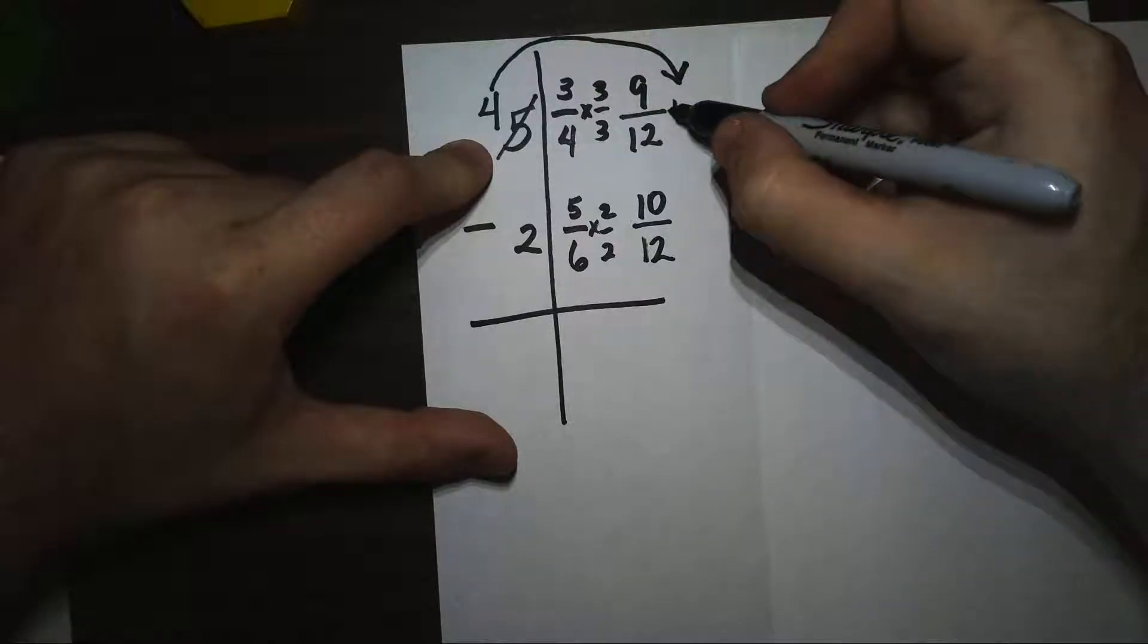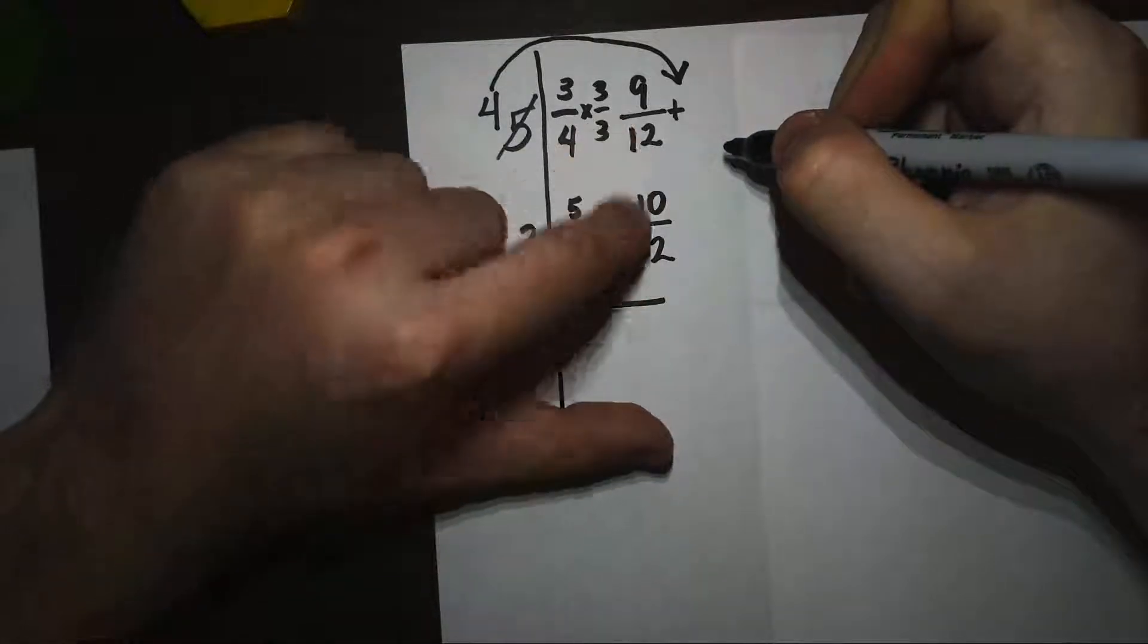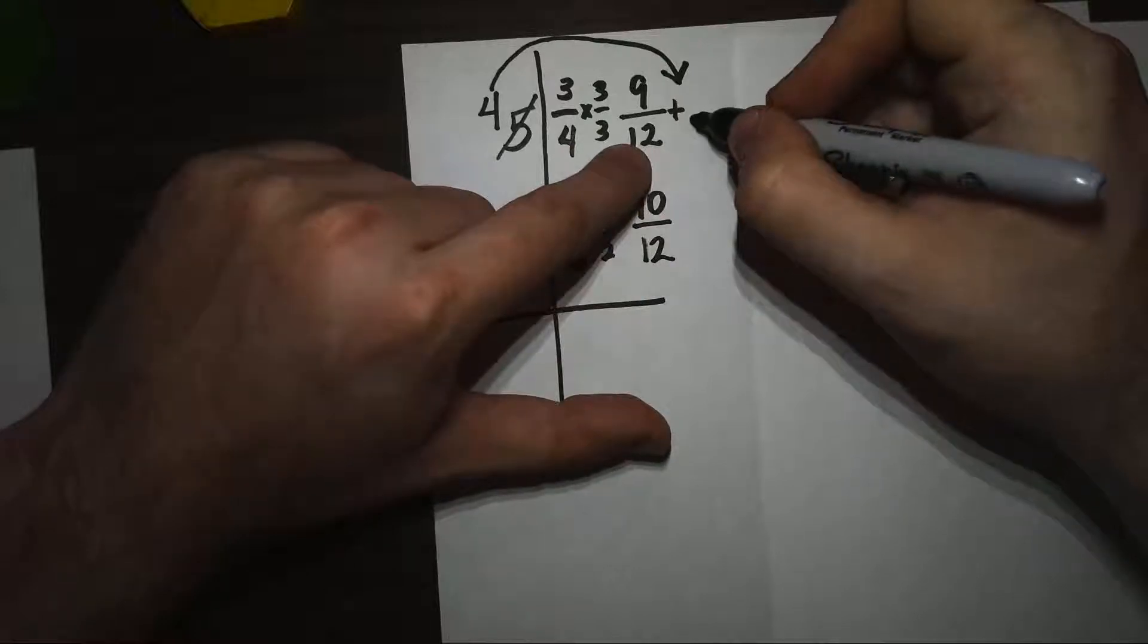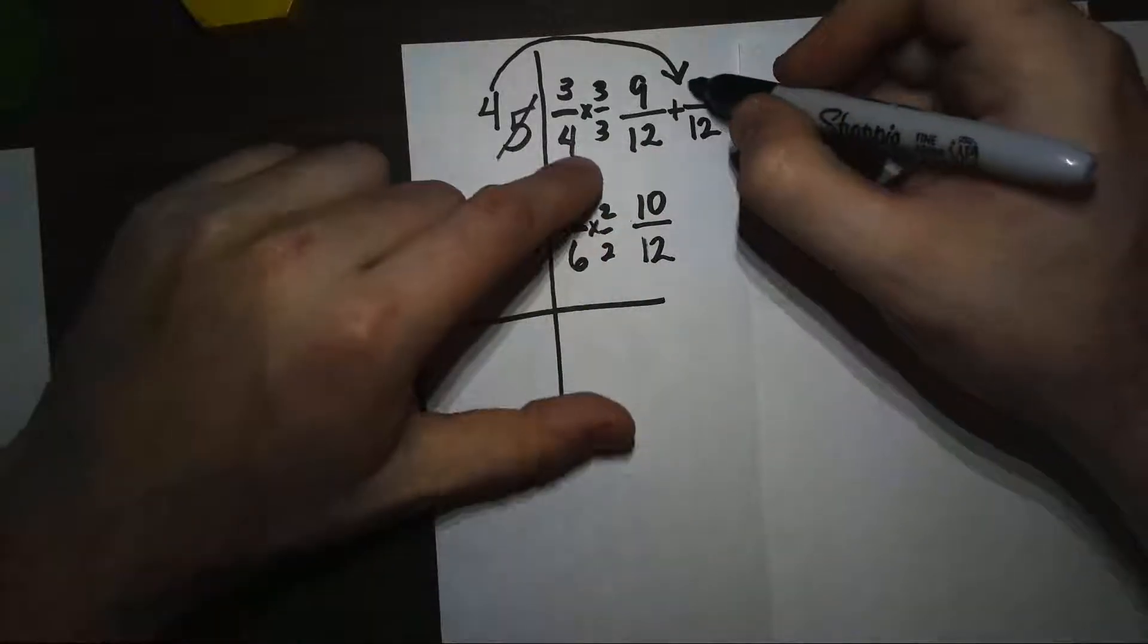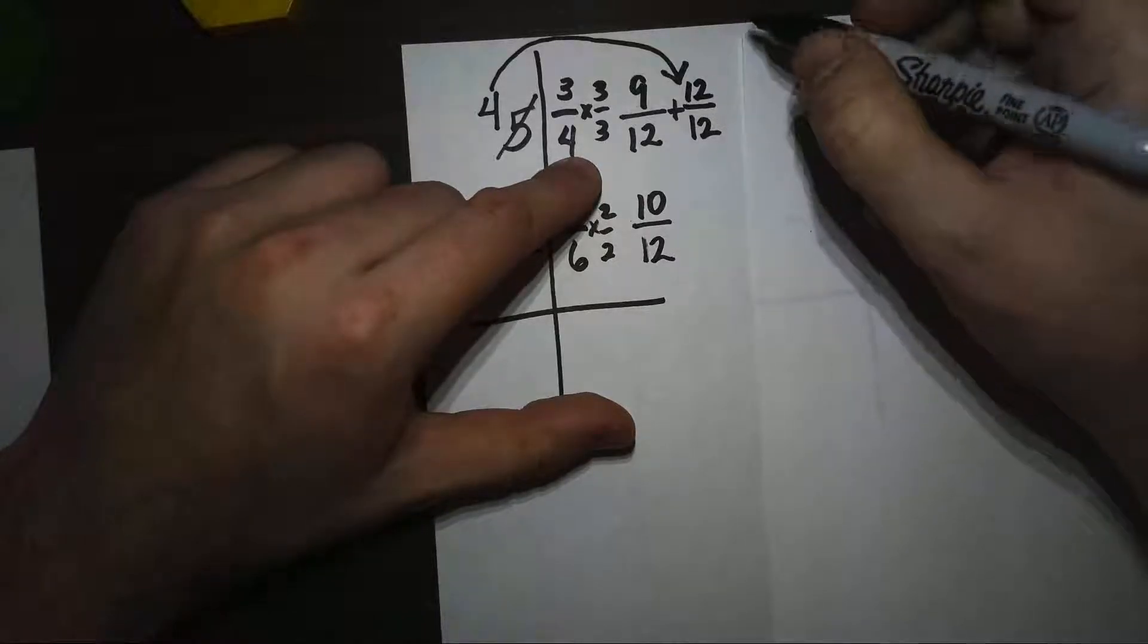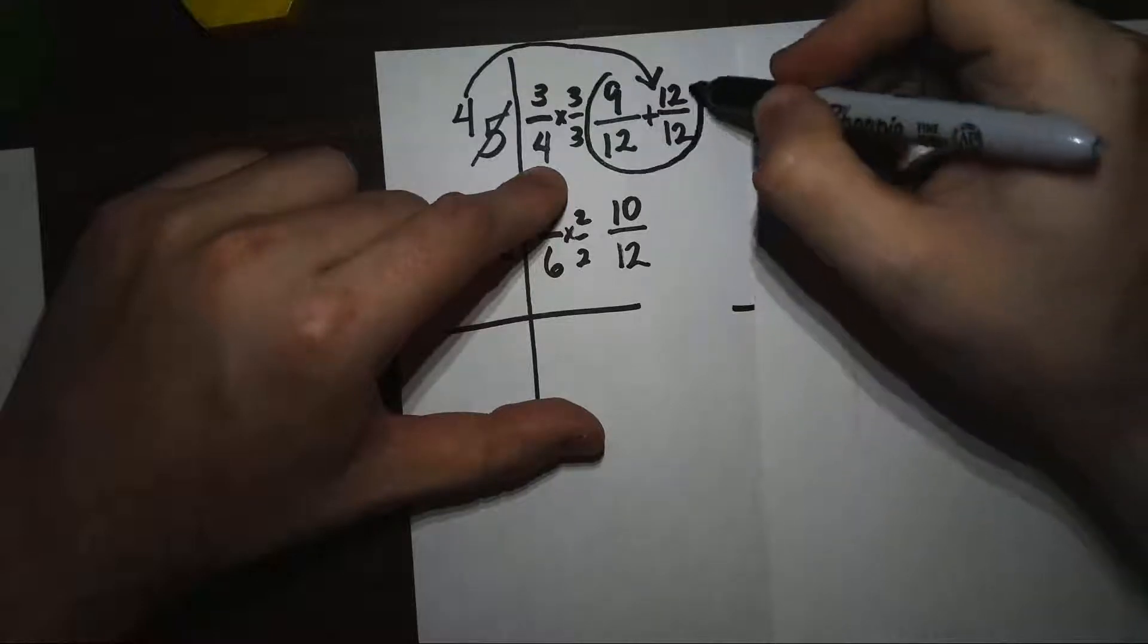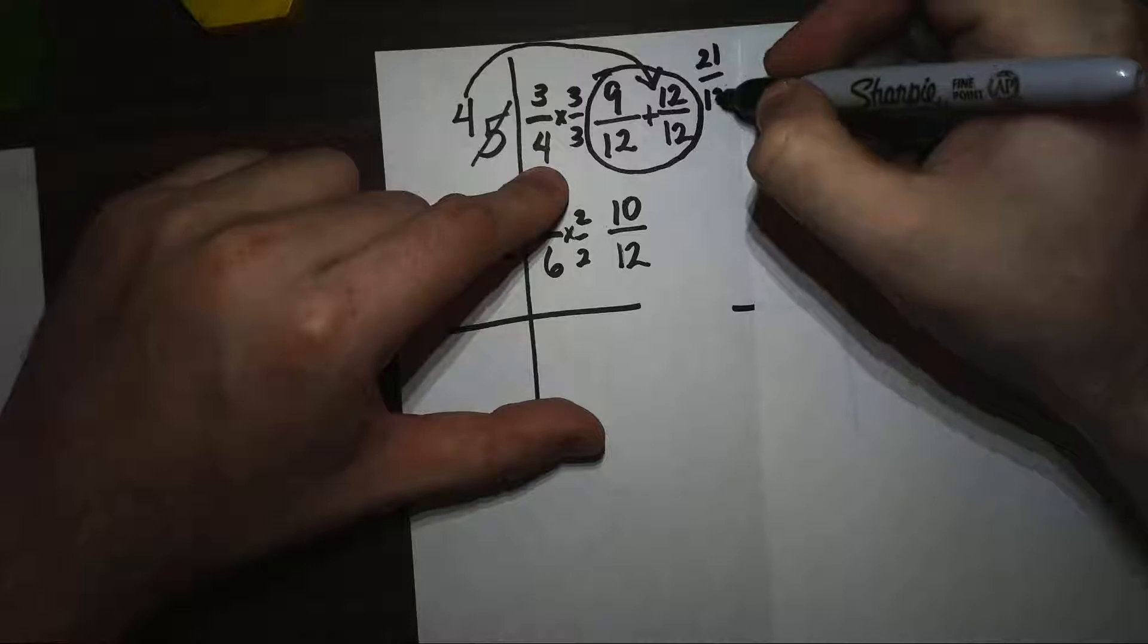When I add that whole back right over here, it becomes a fraction, and it's going to take the denominator of what my fractions already have. So it's going to take the name of 12ths, and because it was 1 whole, it's going to be 12/12. Now all together up here, I have 9/12 plus 12/12, which is 21/12.